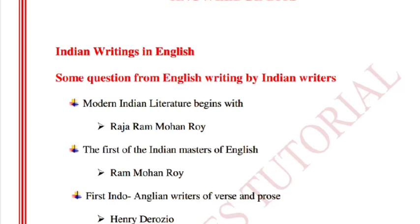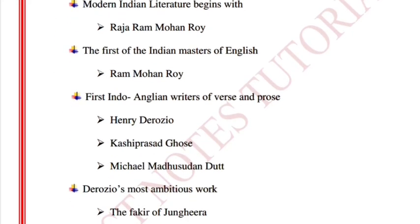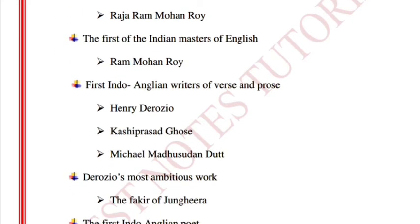Modern Indian literature begins with Raja Ram Mohan Roy, the first of the Indian masters of English. Raja Ram Mohan Roy was one of the first Indo-Anglican writers of verse and prose.